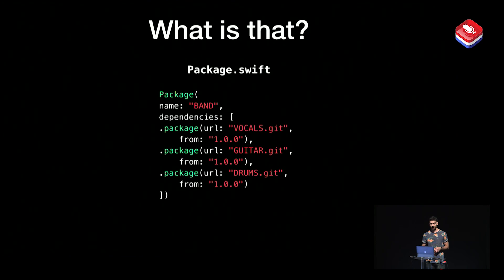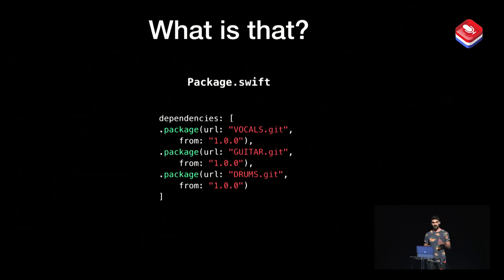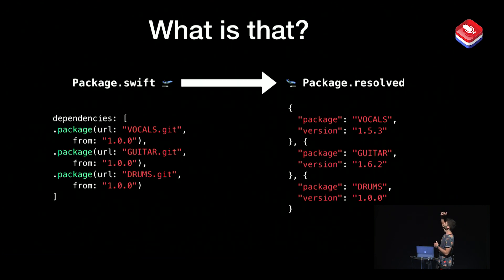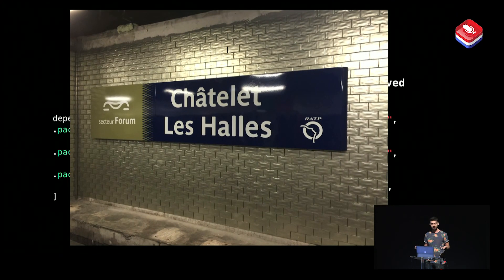In our Swift projects, we have a Package.swift file where we declare our package and its dependencies. But we usually give version ranges instead of exact version numbers. So that means the Package Manager needs to come and resolve these ranges into exact versions. And this is the problem: going from Package.swift to Package.resolved. But it's not an easy problem — it's an NP-hard problem — because there is no straight line between those two. The solution is much more complicated.